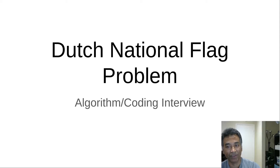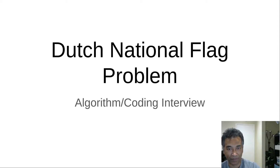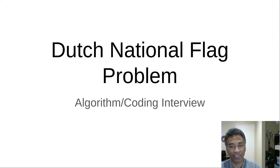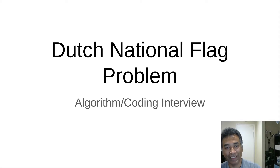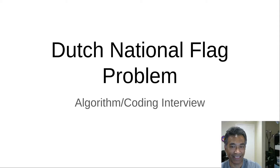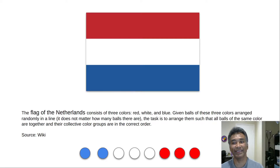The Dutch National Flag is a very well-known algorithmic problem for coding interviews, especially for FAANG companies. It was first proposed by Edgar Dijkstra — one of the brightest minds in the history of computer science, who happens to be Dutch by nationality, and also one of my favorite computer scientists ever.